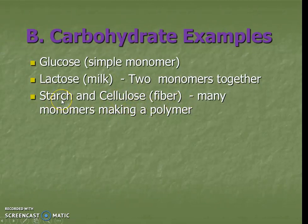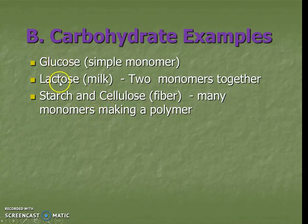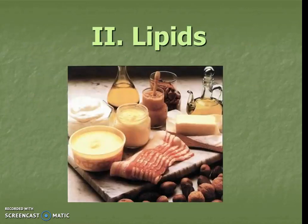Starches are found in things like potatoes, pasta, and rice. So here are three different examples from the smallest to some medium, all the way to some big ones. Let's go on to our next macromolecule category.